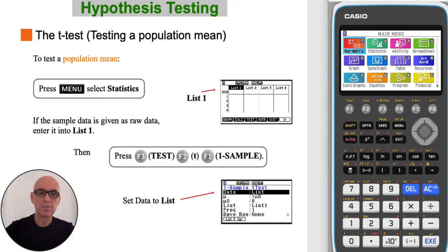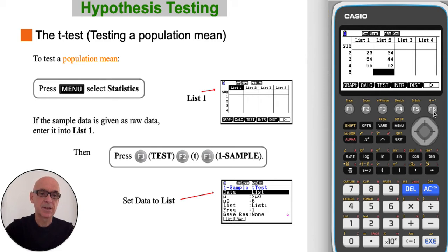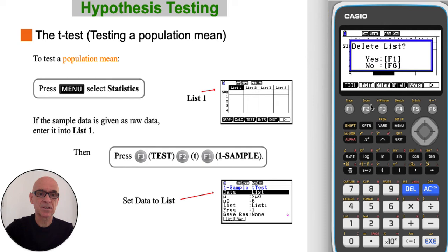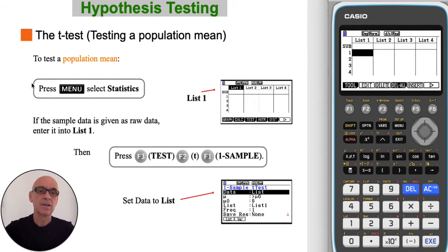To test the population mean, from the main menu, select Statistics, then press F6 and F4 to delete the contents of the lists, confirming with F1 and scrolling across and repeating that for other lists, F4 and F1. Then you're ready to enter the data into list 1.